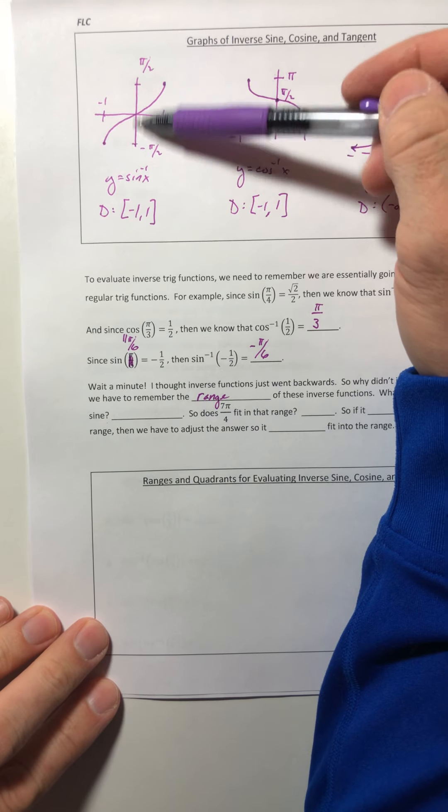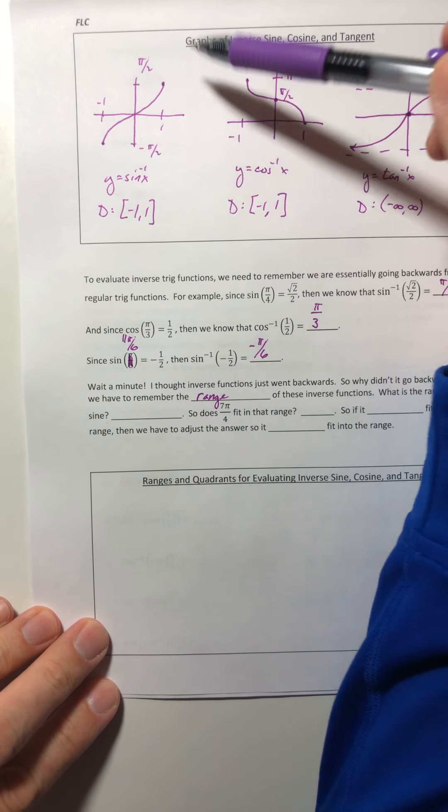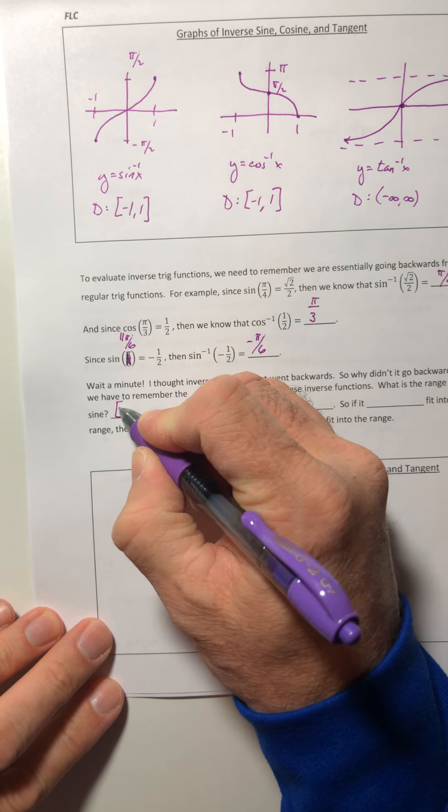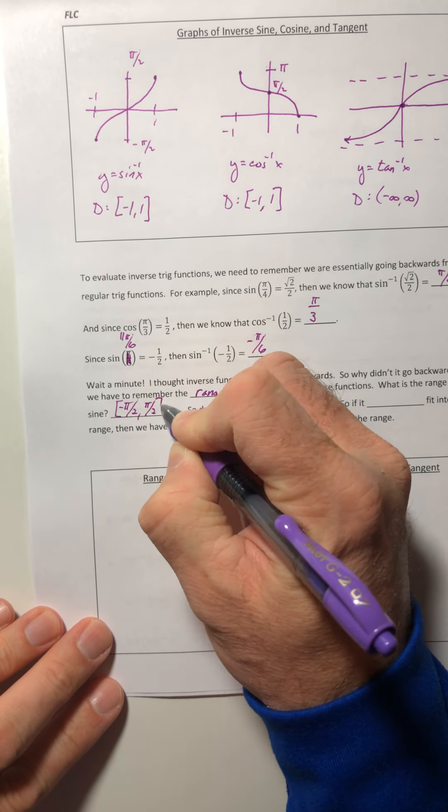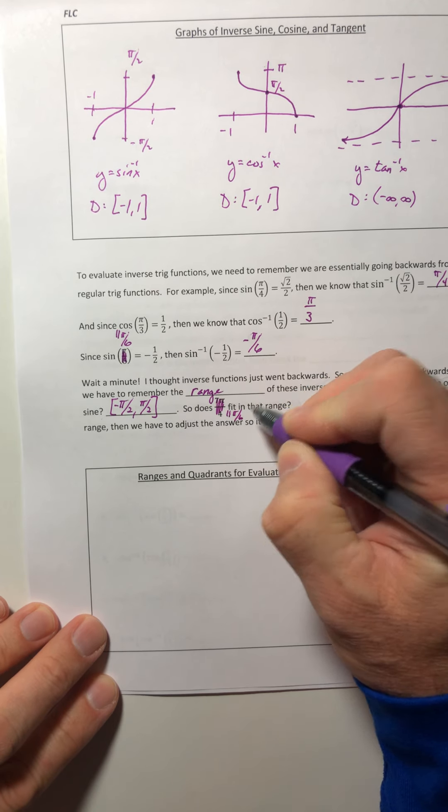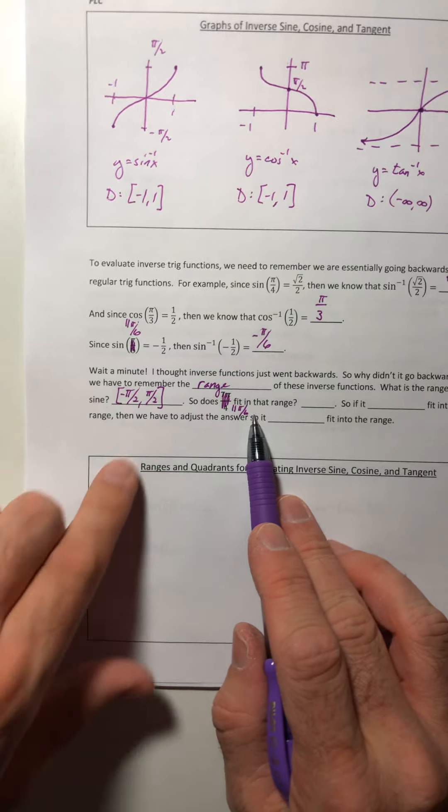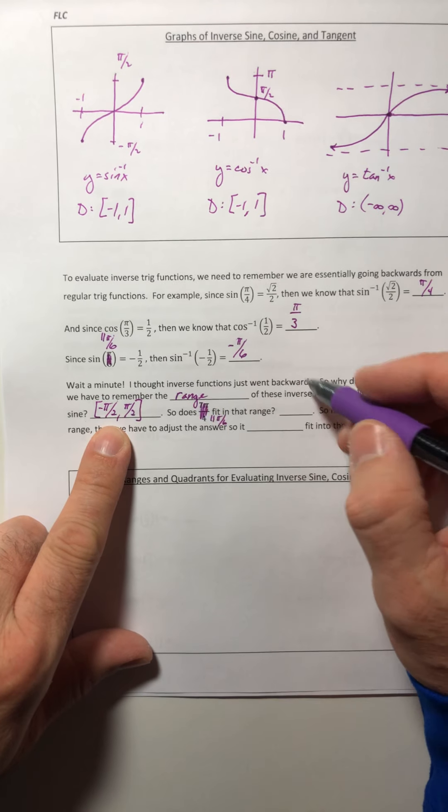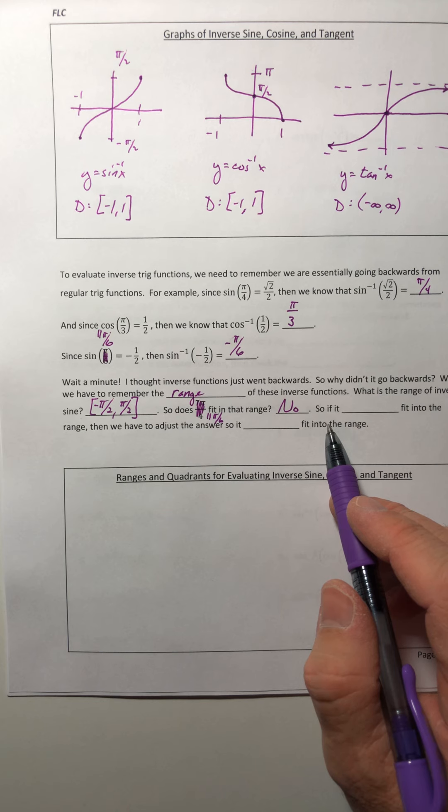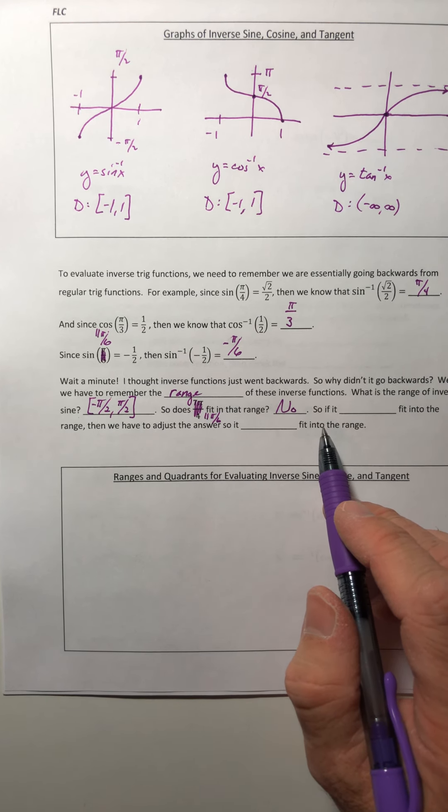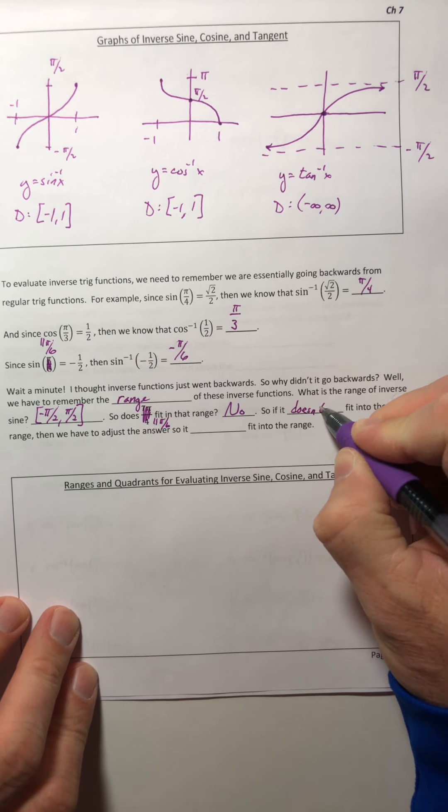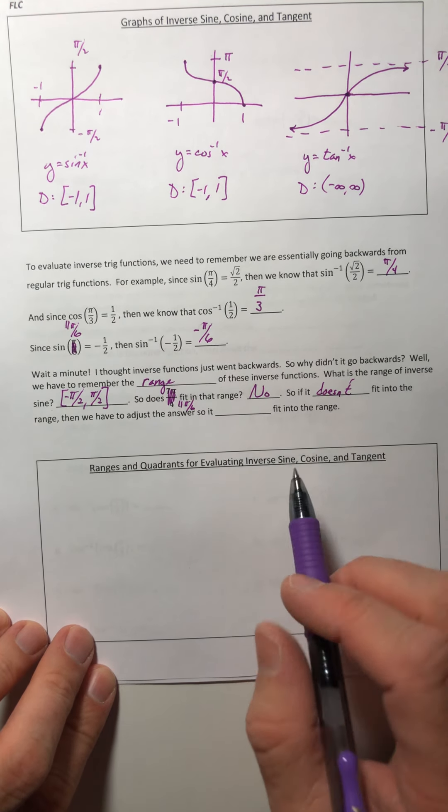Well, apparently this 11π over 6 is not in the range of inverse sine. Well, look at what we graphed up here. So if your range is going off of your y values, the y values or the output for inverse sine are stuck in between negative π over 2 to π over 2. So does—that's obviously a typo as well—11π over 6, this original angle we started with, does that fit in this range over here? Well, that would have to be no, it doesn't. It's way too big. So it does not fit in that range we wanted to, but it just doesn't. So if it doesn't fit into the range, then we have to adjust the answer so it does fit into the range.